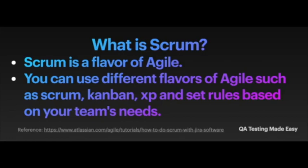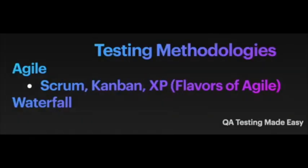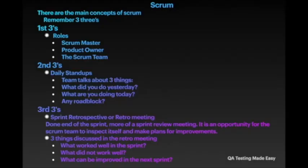Now moving on to Scrum. What is Scrum? Scrum is a flavor of agile — think of it like your favorite candy. Mine is KitKat, which comes in many flavors: chocolate, apple, strawberry, even a weird purple sweet potato flavor, and it comes in different sizes. Similarly, agile is an overall framework that sets certain standards, and from there you can use different flavors of agile such as Scrum, Kanban, XP, and set rules based on your team's needs.